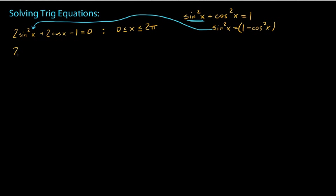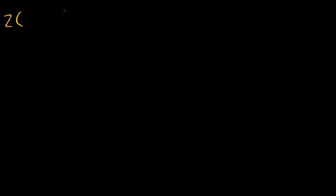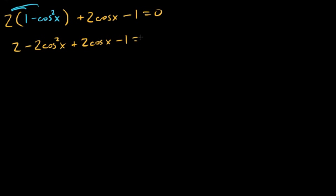So that's going to be our method here to get rid of all other trig functions but one of them. So we say 2 times 1 minus cosine squared of x, as a Pythagorean substitution, plus 2 times cosine of x minus 1 equals 0. So now we're going to clean this up a little bit here. We'll go ahead and distribute our 2, and we'll get 2 minus 2 cosine squared of x. This is plus 2 cosine of x minus 1 equal to 0.